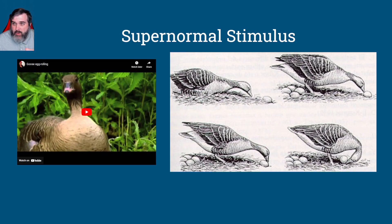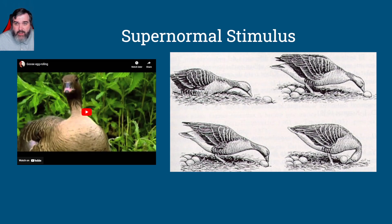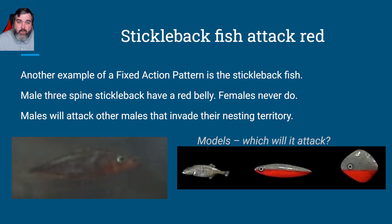This is referred to as a supernormal stimulus because it's an exaggerated stimulus and it elicits a stronger response. The ultimate causation of this is that larger eggs typically produce healthier chicks. And so it's a FAP because it has to continue to completion once it starts.